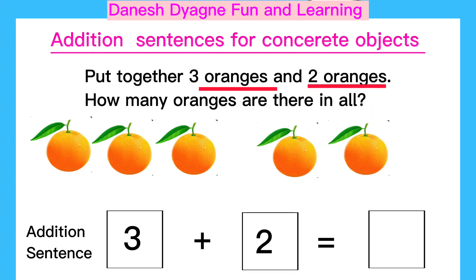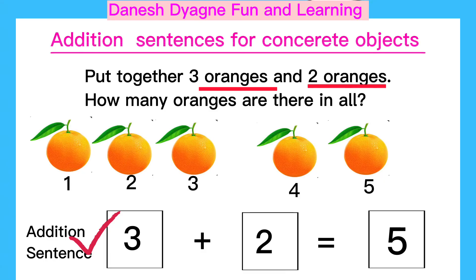Let's count the total number. One, two, three, four, five. The total is five. The addition sentence is three plus two equals five.